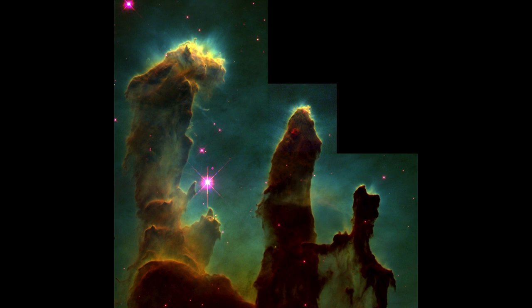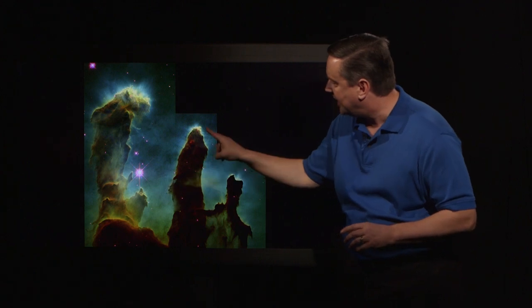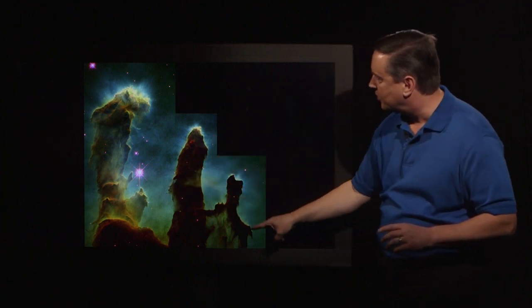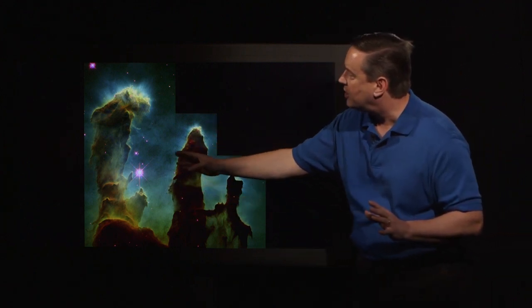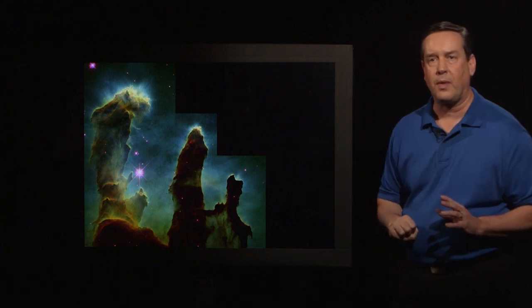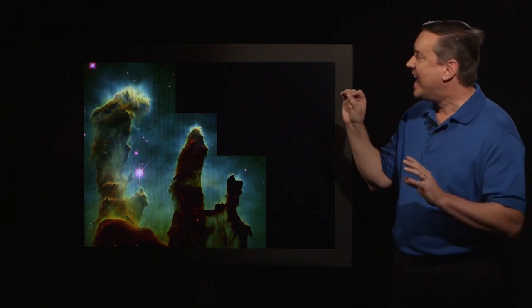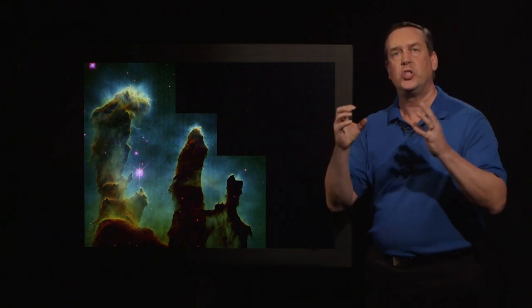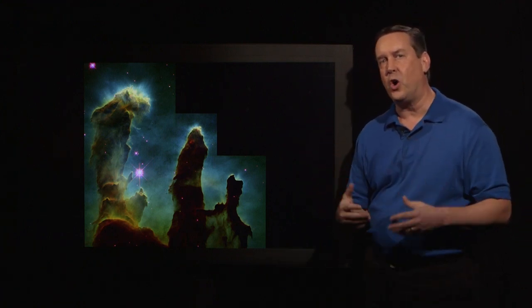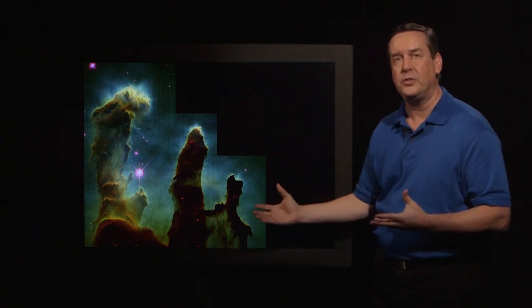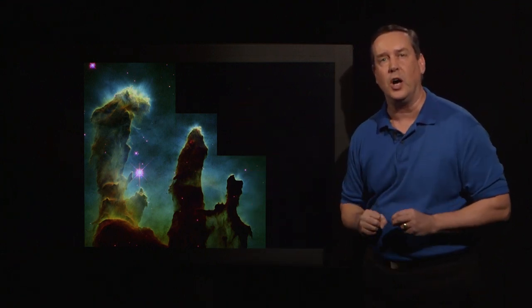In it, you can see three dark gas pillars that are brightly highlighted by this yellow ionization front around those pillars. And inside those pillars, stars are forming. So that's why they're called the Pillars of Creation. Beautiful pillars, but they have star formation going on inside.